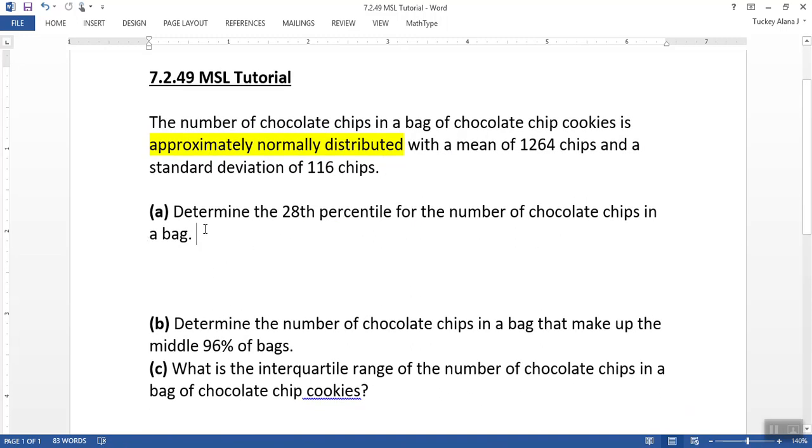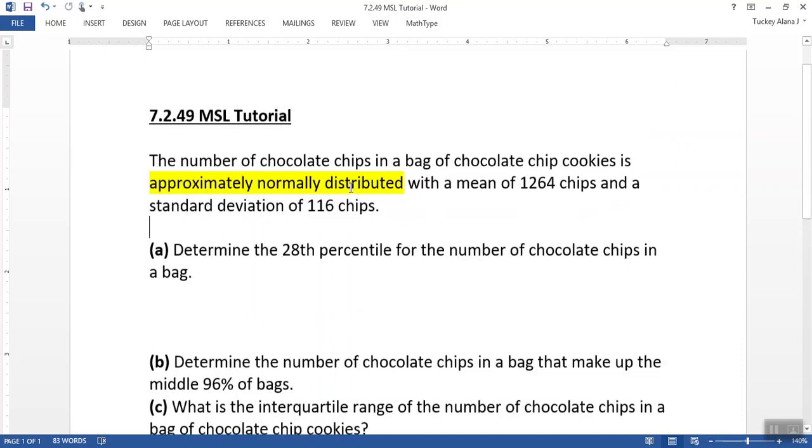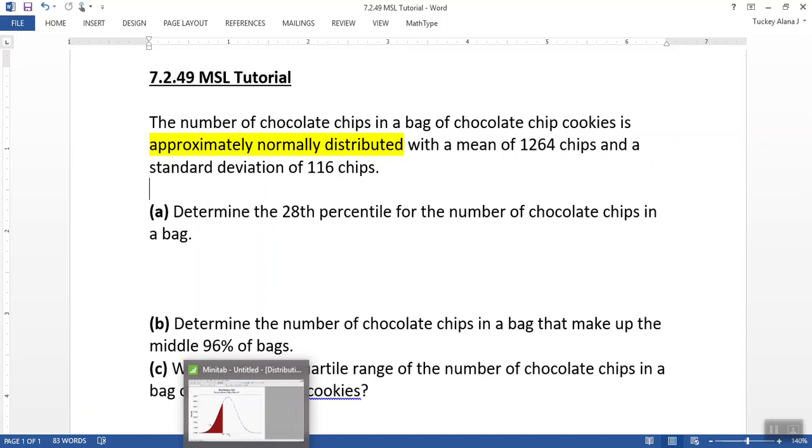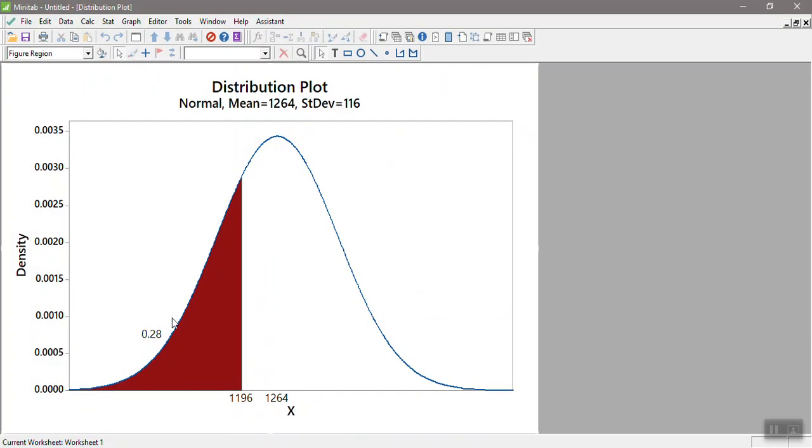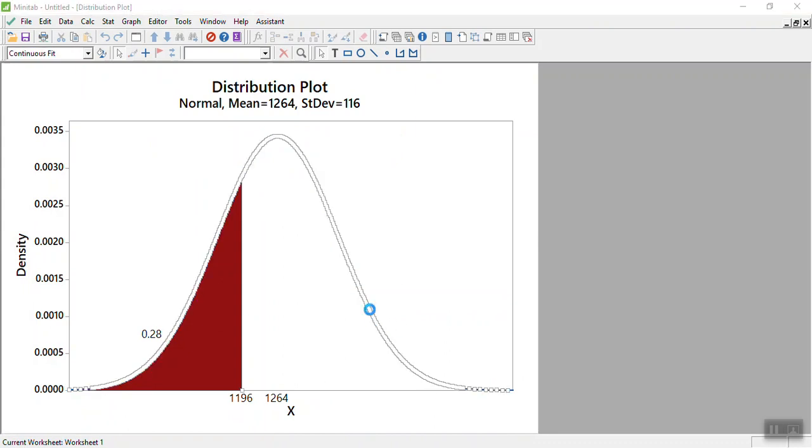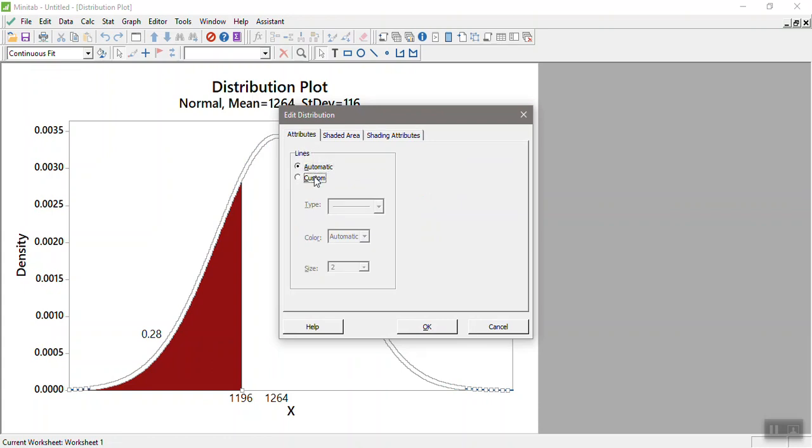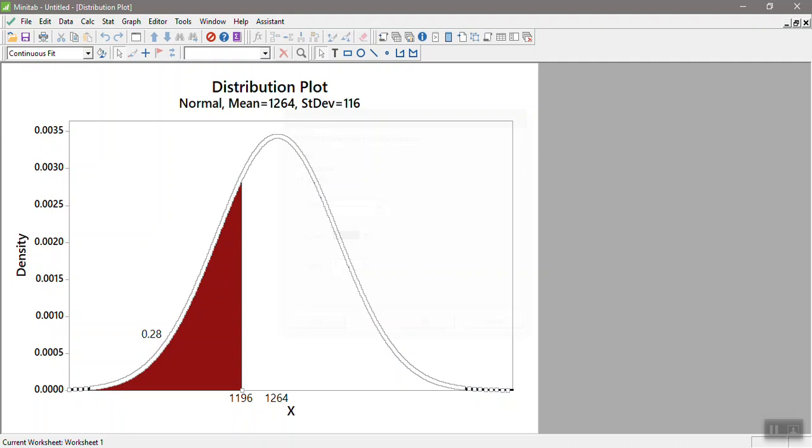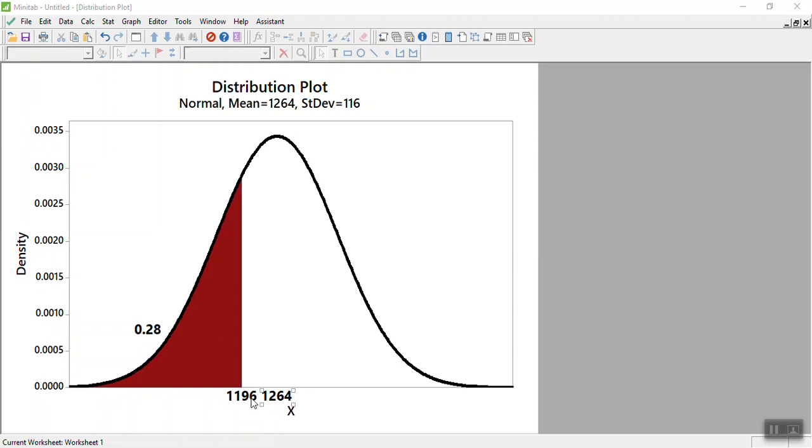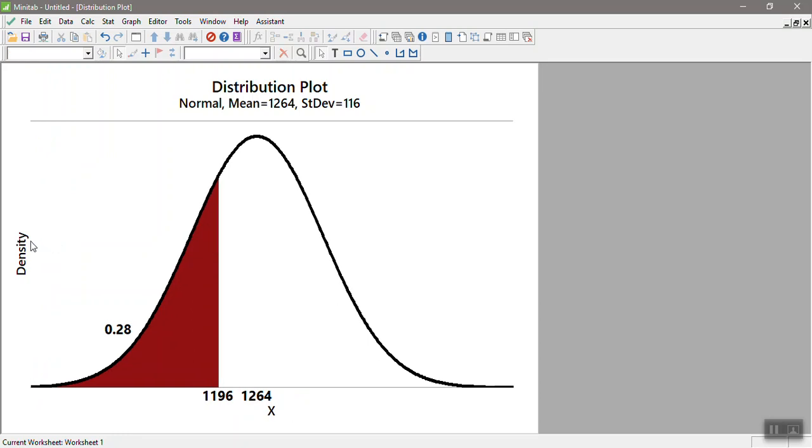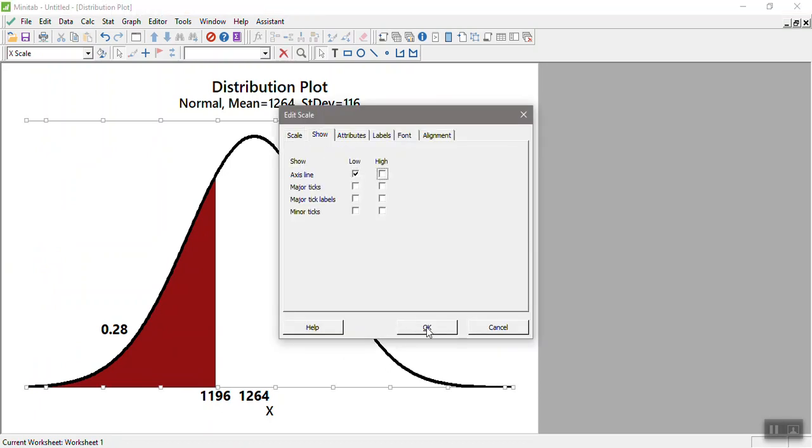So the first thing they want us to do is determine the 28th percentile for the number of chocolate chips in a bag. A couple of things: normally distributed means that it's normal, so I'll be able to use normal CDF and inverse norm and all those other beautiful things. And I drew a picture of this so you could see it. It's normally distributed, so it's got the normal curve. It's got a mean of 1264, so that's at the center line. So I'm just trying to make it so this is a little bit darker so you can see it a little bit better.